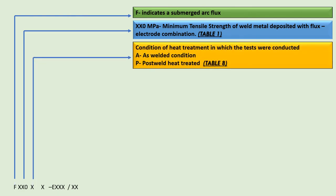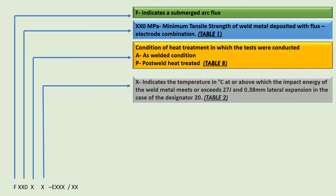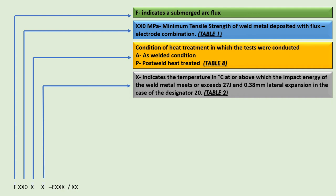After that, we have an alphabetic designator indicating the heat treatment condition in which the tests were conducted. A indicates the as-welded condition; P indicates the post-weld heat treated condition. Table 8 in SFA 5.39 gives detail about this. Next is a numeric designator indicating the temperature in degrees Celsius at or above which the impact energy of the weld metal meets or exceeds 27 Joules — and 0.38 mm lateral expansion in the case of Designator 20. Details about impact test requirements are given in SFA 5.39 Table 2.